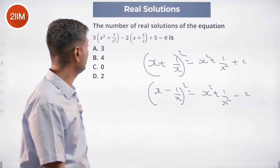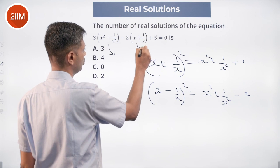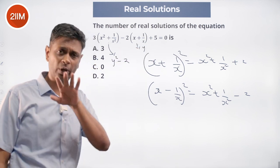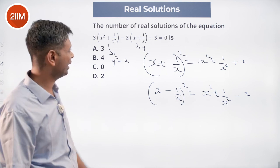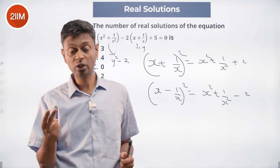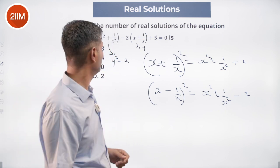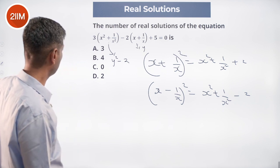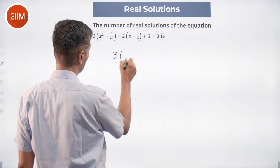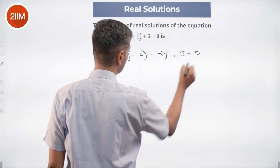So what do we do? We take x plus 1 by x, call it y. This will become y, and x squared plus 1 by x squared becomes y squared minus 2. We solve for y, we get the values of y and then plug in y as x plus 1 by x. We will see whether we get two values for y and which of the values of y will fit in for x — both of them. So first of all we plug it as y. So this is y squared minus 2: 3 times (y squared minus 2) minus 2y plus 5 equals 0.